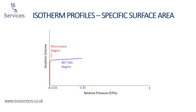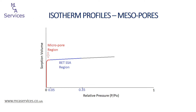Of course we don't necessarily use this entire range, and each isotherm must be inspected and the appropriate range fitted for each sample individually. As relative pressure is increased beyond the BET range, we will start to fill the larger pores present within the sample, and the relative pressure at which this occurs depends on the pore sizes present.